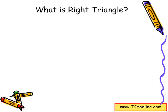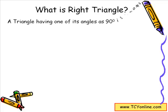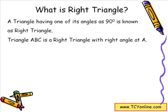We are aware that the Pythagorean theorem is used in a right triangle. A right triangle is basically a triangle having one of its angles as 90 degrees. For example, in triangle ABC, angle A is a right angle, so we can say that triangle ABC is a right triangle.